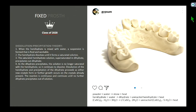We also learned with alginate that using warm water made it set real quick — similar principle here. Warm water will accelerate the set of gypsum. So be careful when pouring up your casts about the temperature of the water, especially here in Arizona where some of those pipes get real warm in the summers. That's why some of us had to repeat that alginate multiple times.